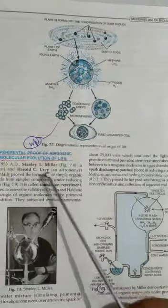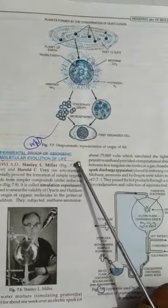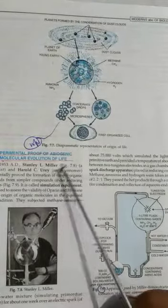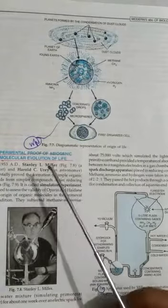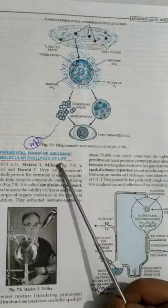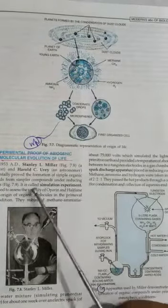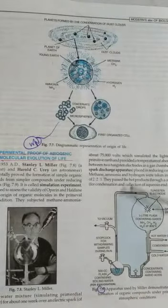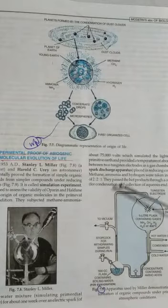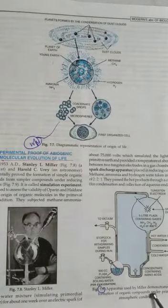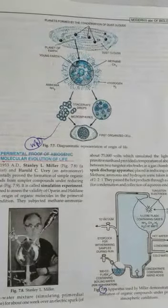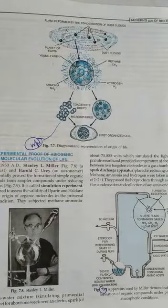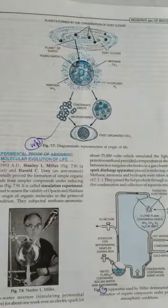The experimental proof of abiogenic molecular evolution of life. This means by abiogenic molecules, the first molecules were formed. This was proved by Stanley Miller in 1953 by making an experiment. He made an apparatus for abiotic formation of organic molecules.